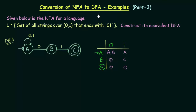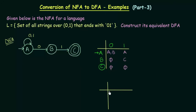We have to convert to the equivalent DFA. We will be using the subset construction method and for that we will be making the transition table for the DFA. In this table we will be making the transitions for the DFA. I will have 0 and 1 as my inputs. The starting state is A.